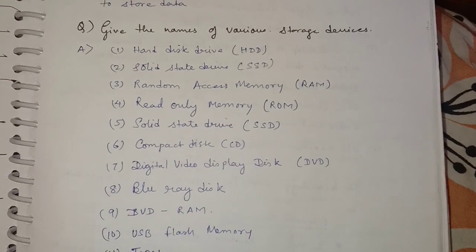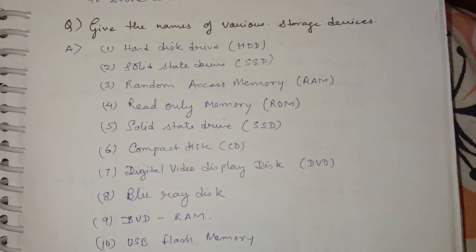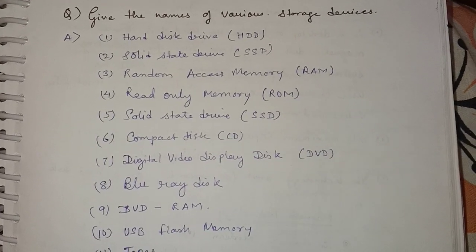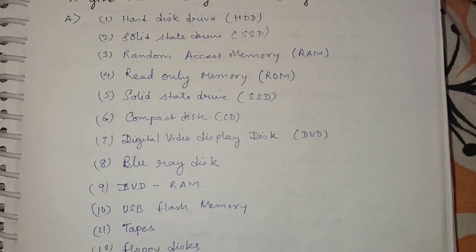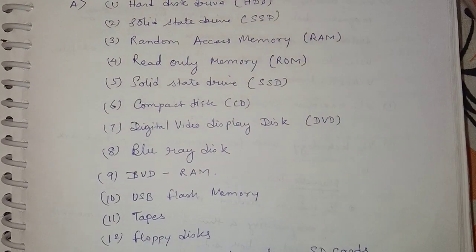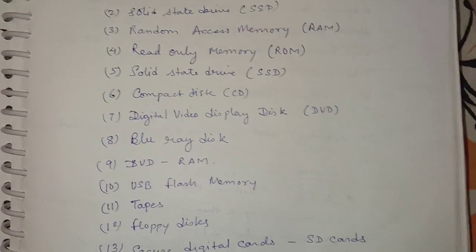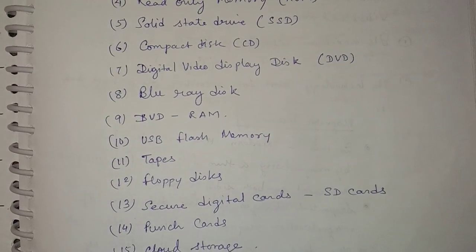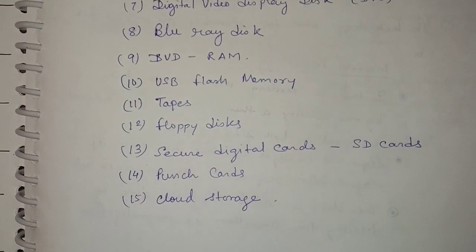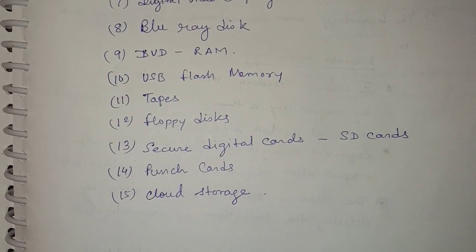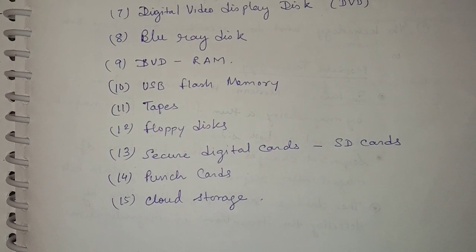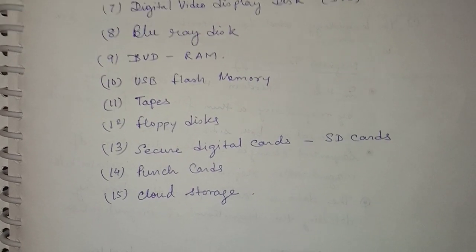So what kinds of storage devices are used? Let us see: the first is Hard Disk Drive (HDD), the second is Solid State Drive (SSD), the third is Random Access Memory (RAM), the fourth is Read Only Memory (ROM), then Compact Disk (CD), Digital Video Disc (DVD), Blu-ray Disk, DVD RAM, USB flash memory, tapes, floppy disks, Secure Digital cards (SD cards), punch cards, cloud storage, and so on.